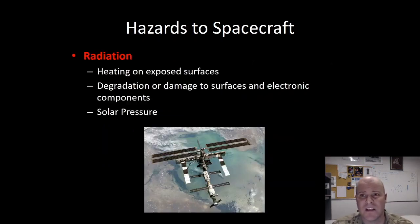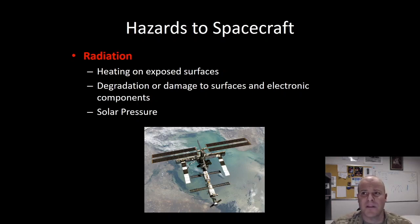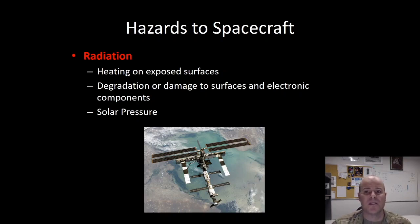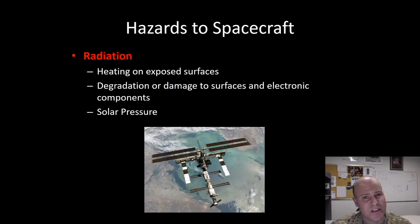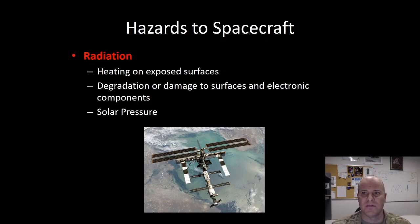Our next hazard is that of the radiation environment. The radiation environment from the sun can heat exposed surfaces, which is generally pretty good for solar cells when it comes to power, but it can be bad for electronic components and the cells themselves if the heat is too much. It can also degrade spacecraft coatings, particularly on solar cells over time. Solar pressure is caused by photons and is very small compared to drag; however, over time it can upset a spacecraft's orientation, causing it to point in the wrong direction.